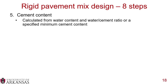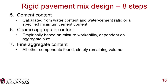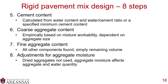Step 5: calculate cement content from water content and water-cement ratio, or use an agency-specified minimum. Step 6: determine coarse aggregate content, empirically based on workability and aggregate size. Step 7: determine fine aggregate content — once all other components are determined, fill the remaining volume with fine aggregate. Step 8: make adjustments for aggregate moisture, which is critical because water drives cementitious hydration and strength gain.